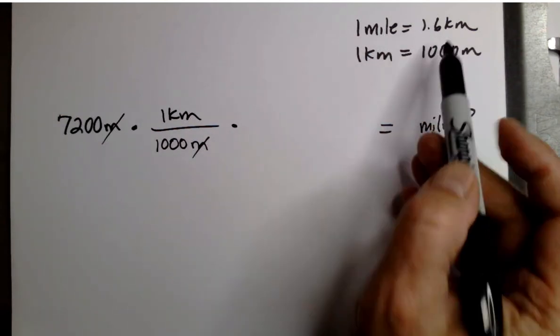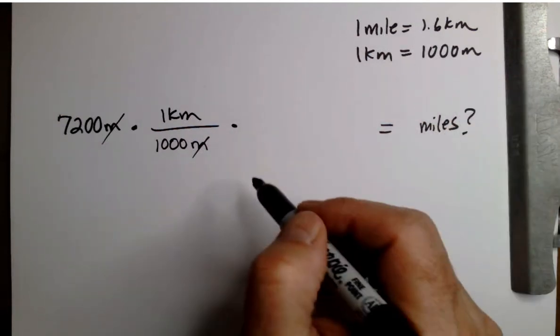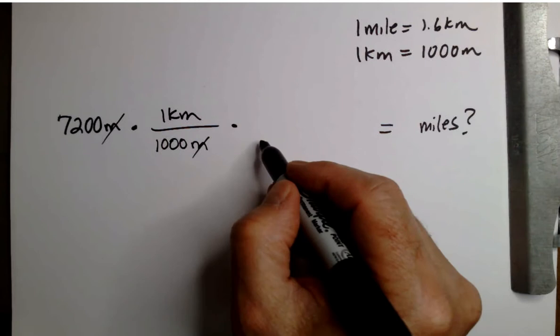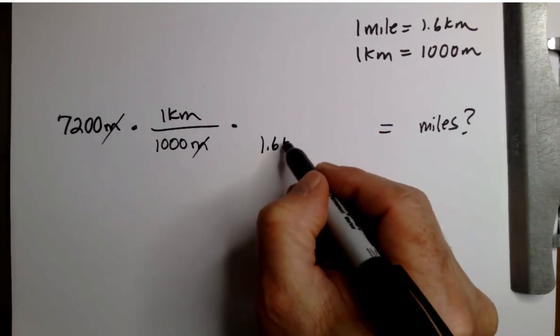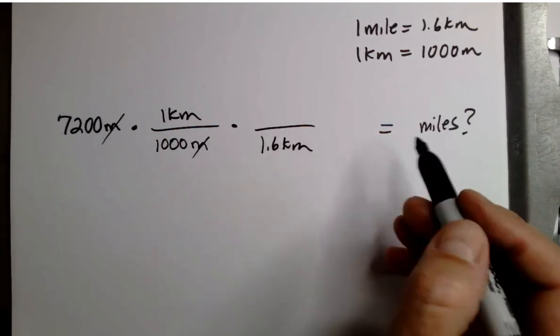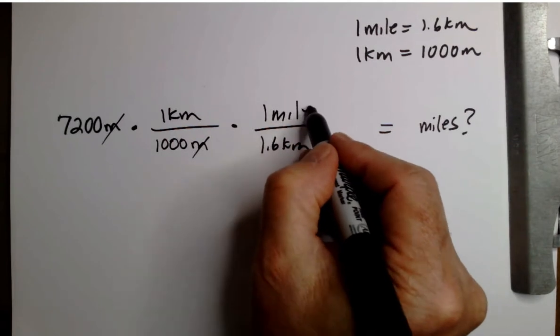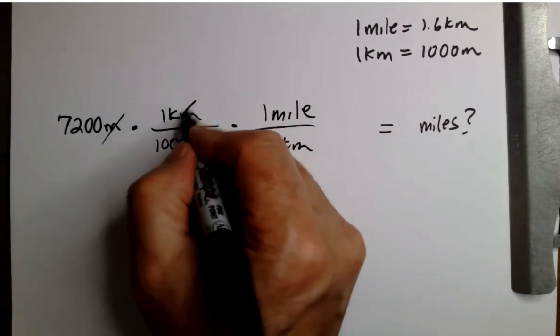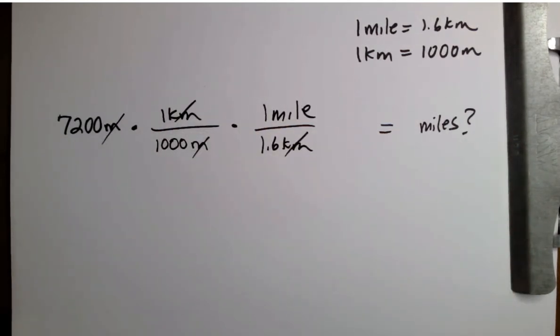And then notice that I got this from a chemistry lab manual. 1.6 kilometers is the same thing as one mile. That allows kilometers to cancel.